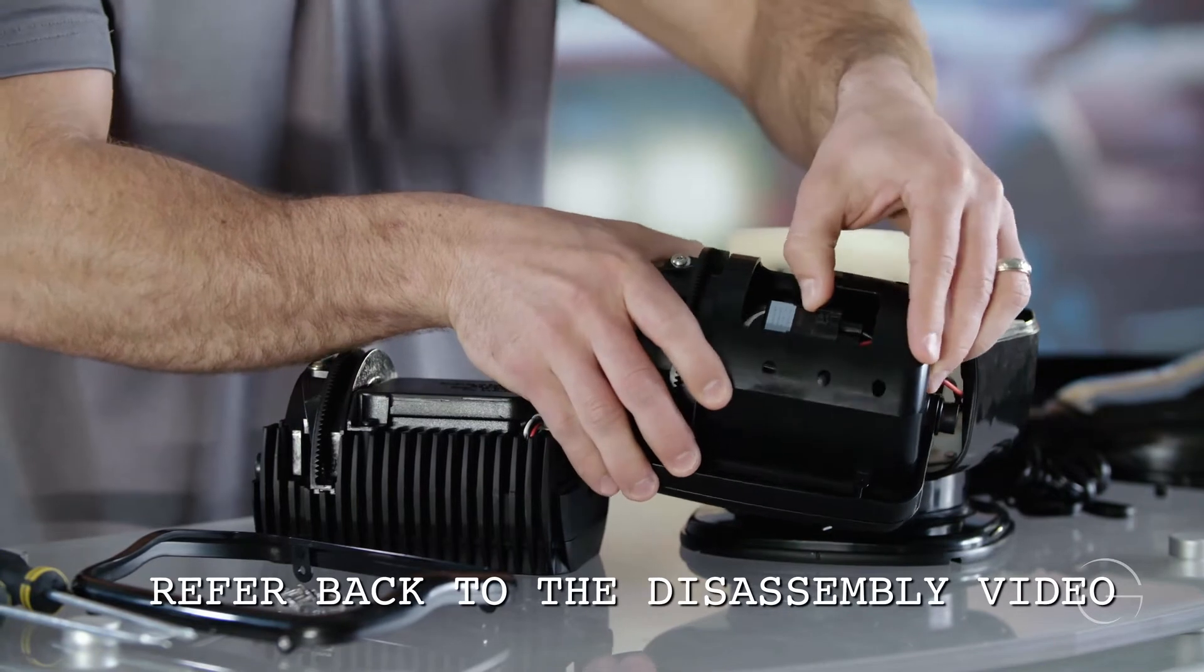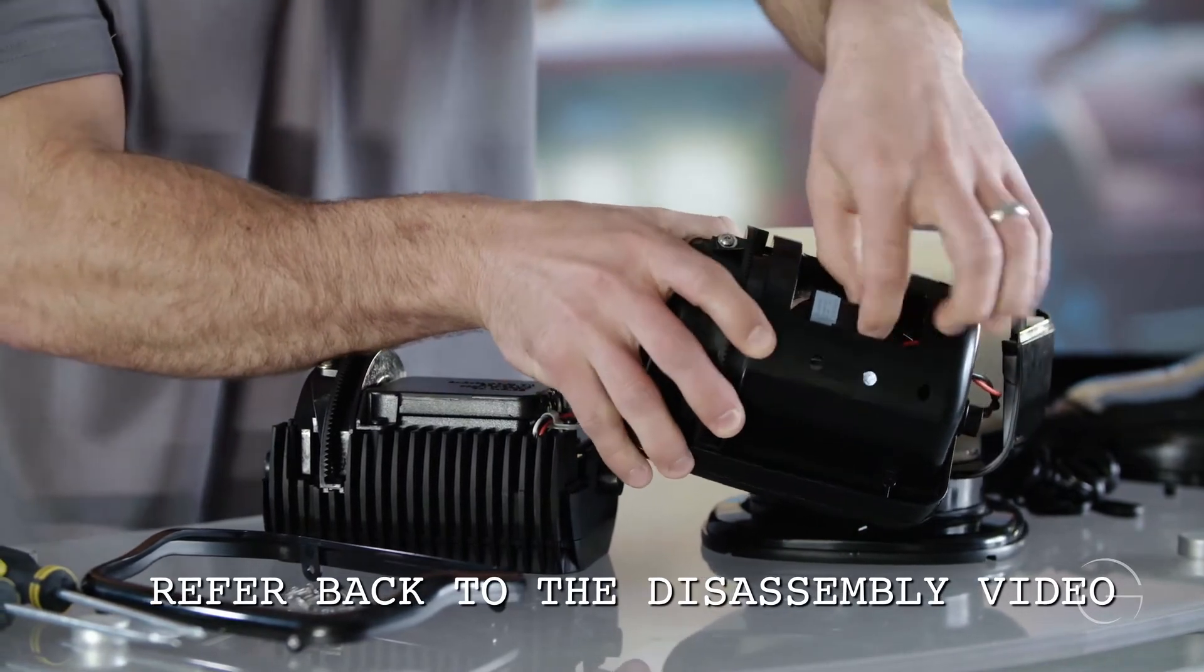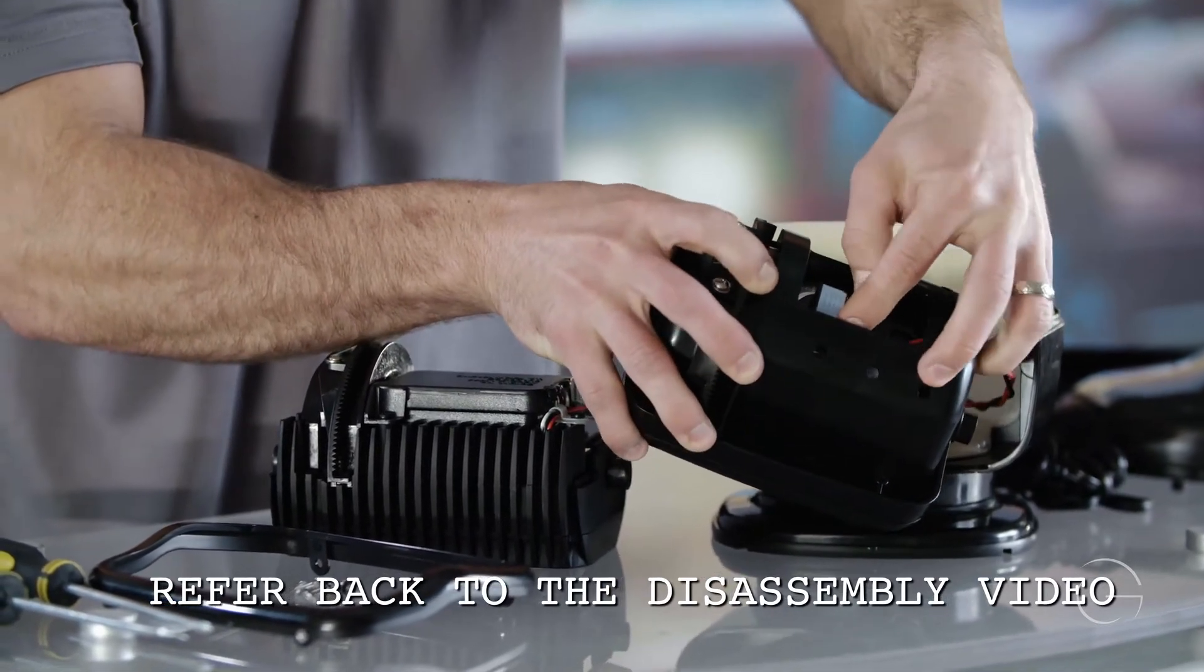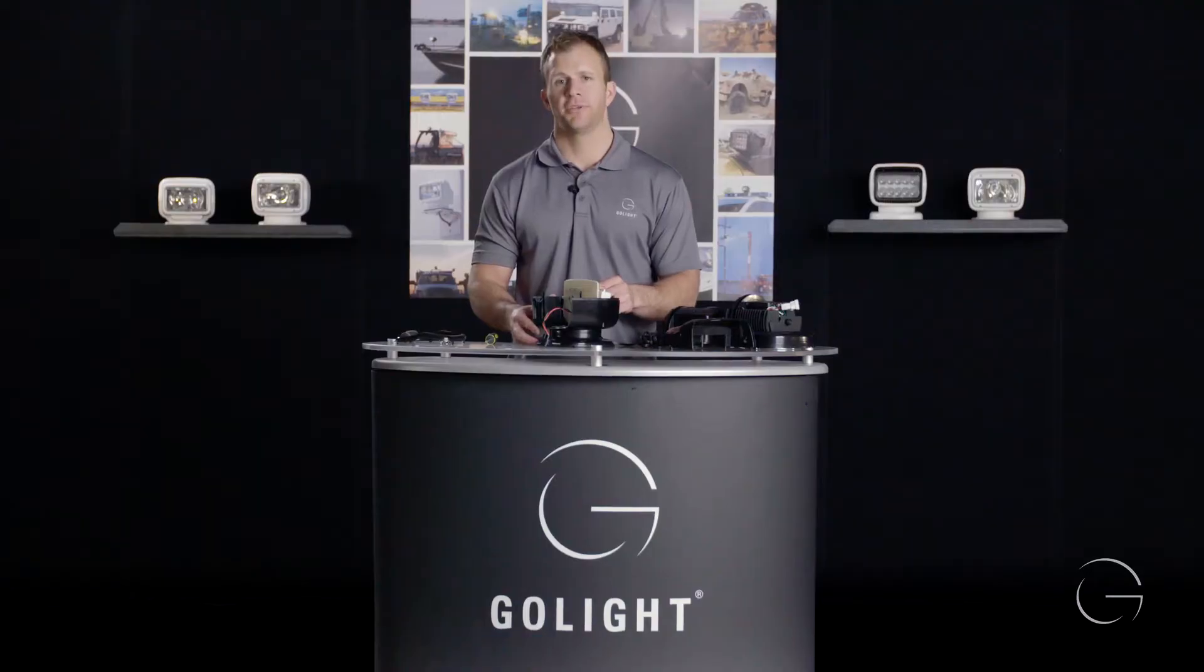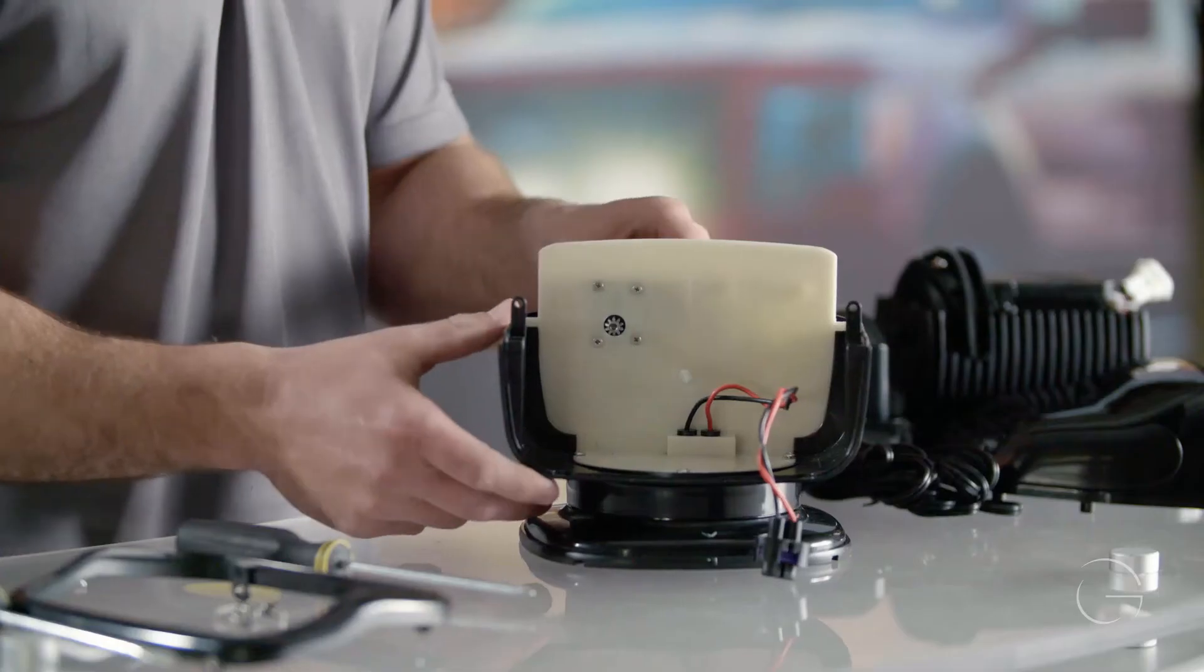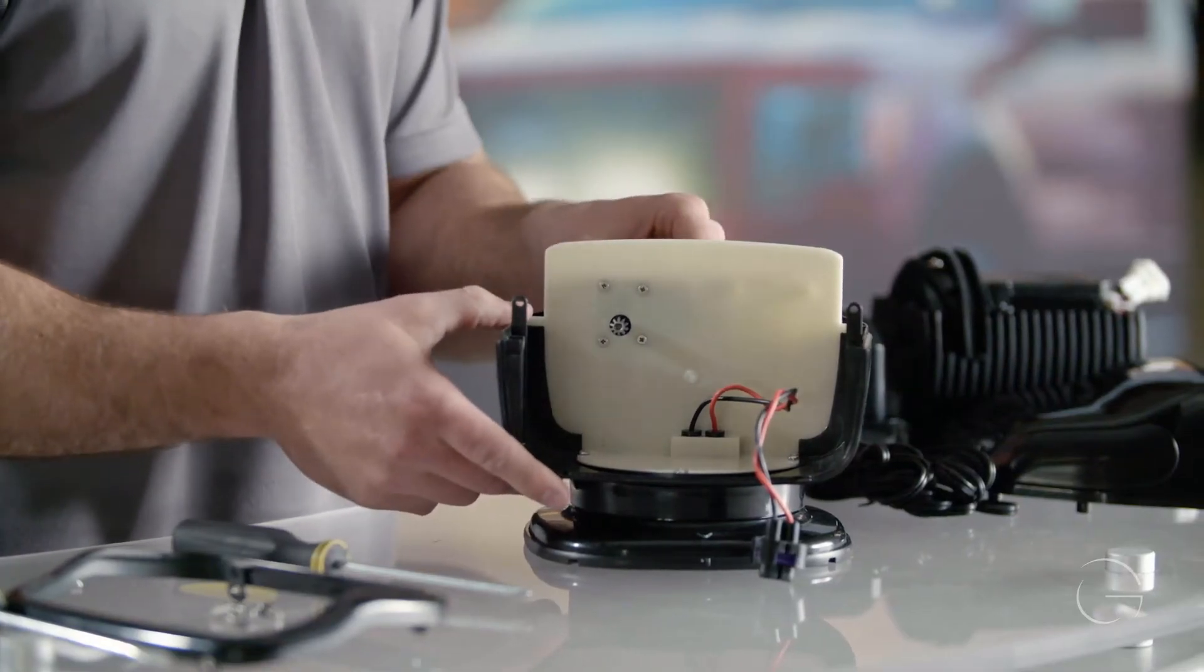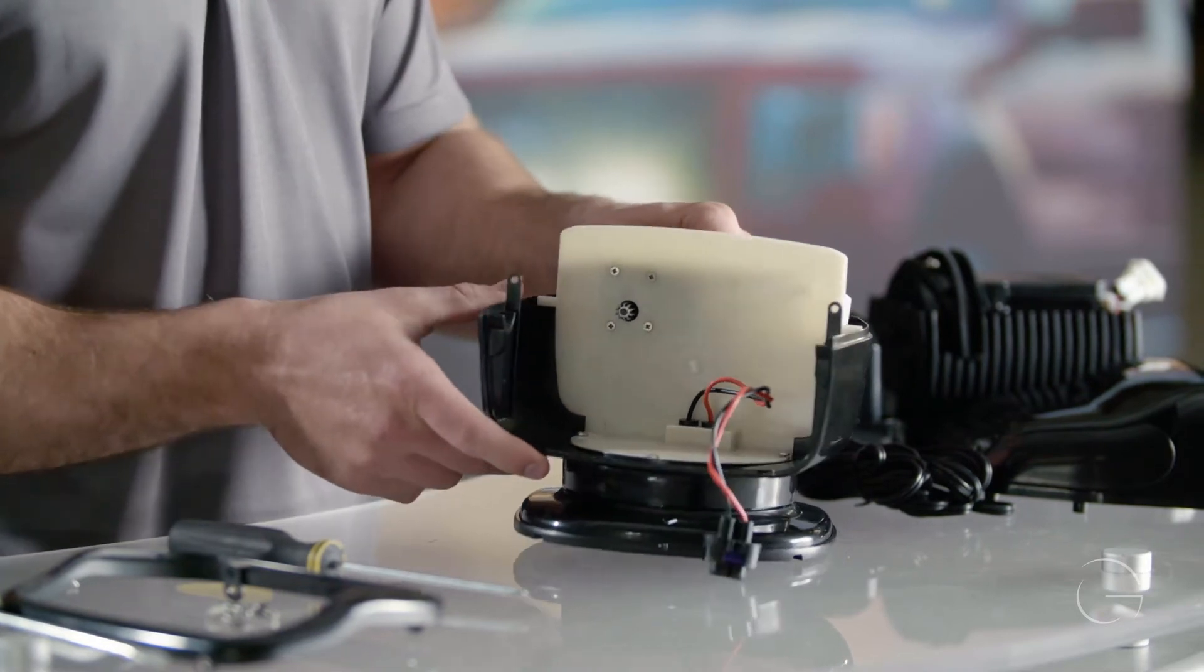Then we will remove the bulb connector. To do that, lift the tab and push the bulb out. Please refer back to the Go Light Radio Ray disassembly video to get you to this step. To remove the vertical motor and gear, you'll need to remove the four screws that are on the bulkhead.